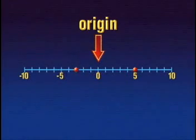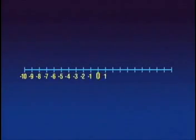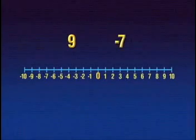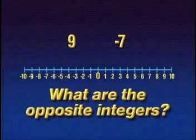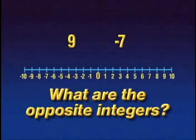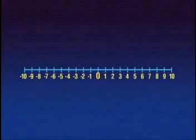Let's take a couple of minutes and try the following example. Draw a number line from negative 10 to 10. Graph the integers 9 and negative 7, then graph the numbers you think might be their opposite integers. Teachers, this might be a good time to pause the tape so that students can give this a try.